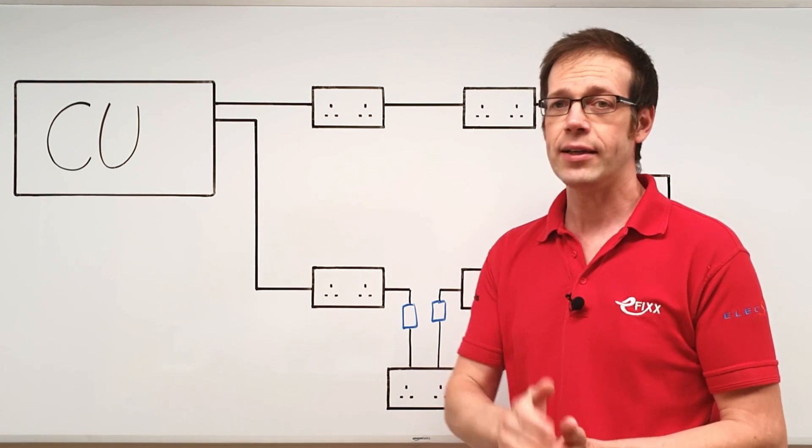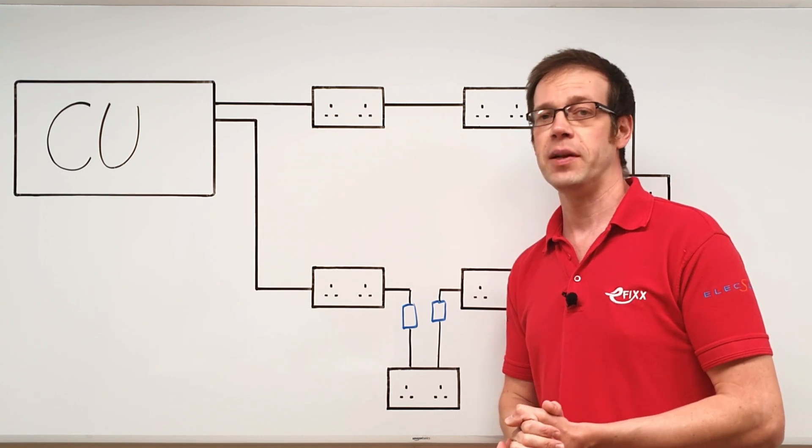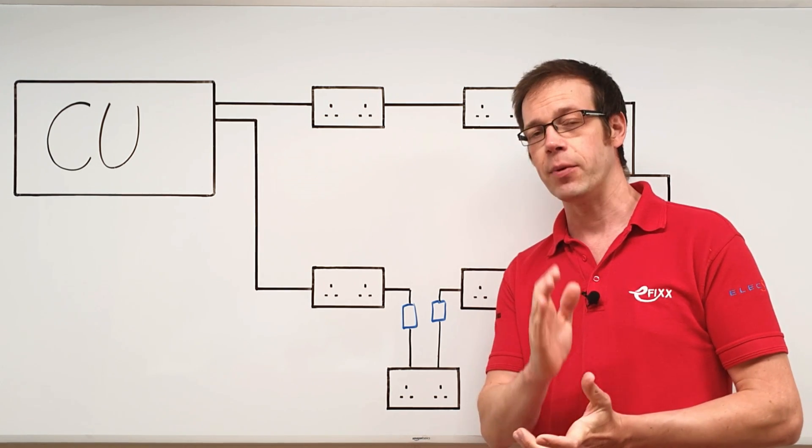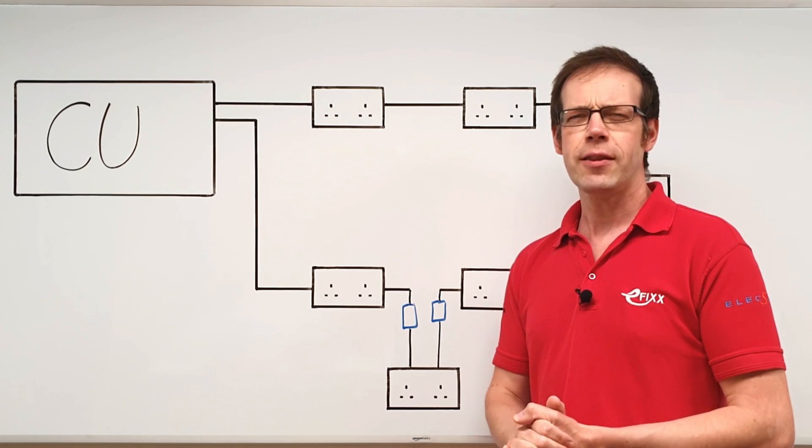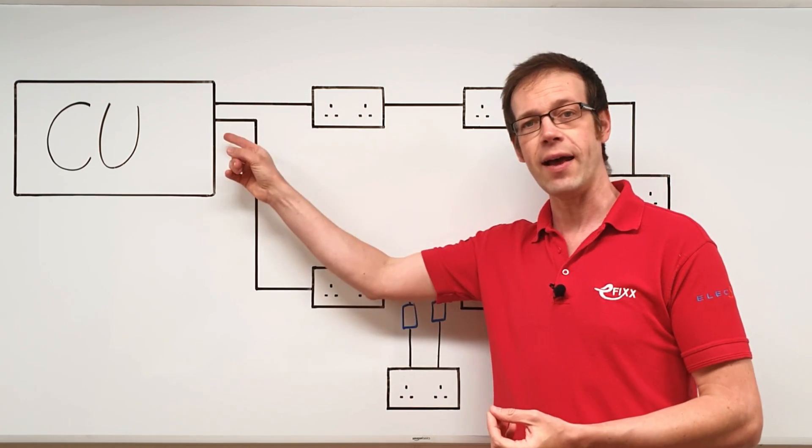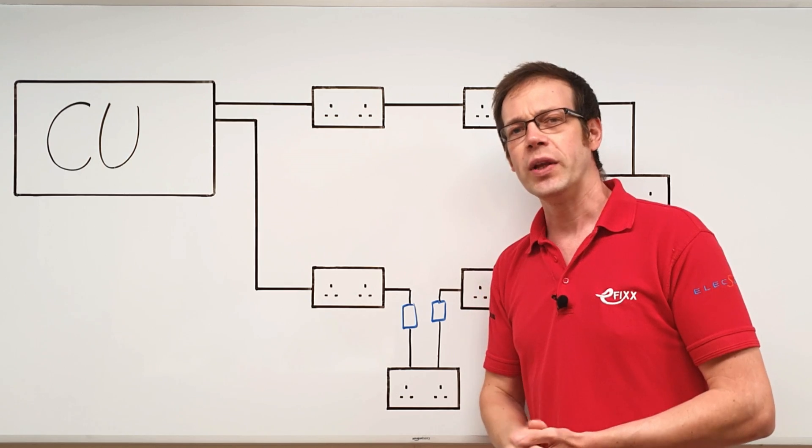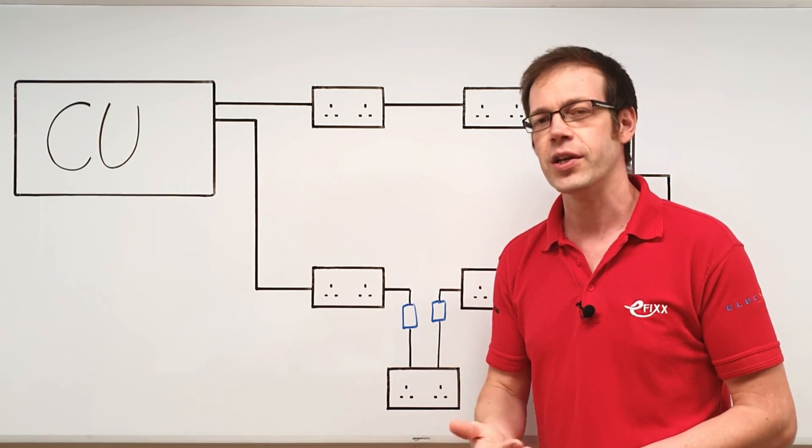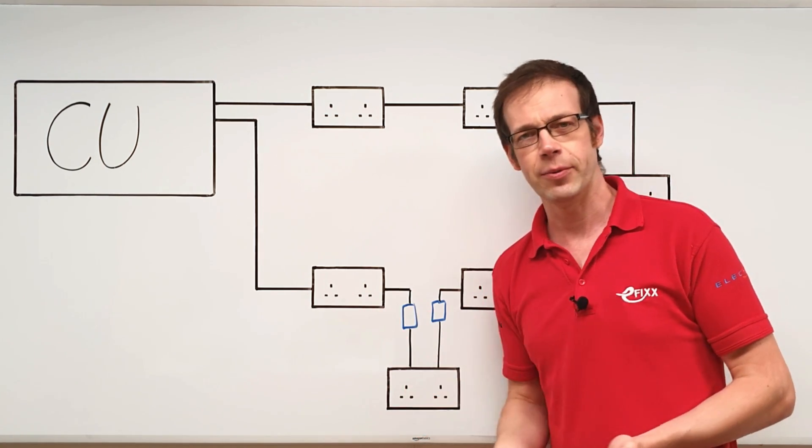Now, I'm sure you'll remember that a radial circuit wired in 2.5 millimeters squared can be protected by a 20 amp MCB. It's an interesting thought that when we convert to a ring, giving the electricity that additional path from the consumer unit, we don't double the amount of current the circuit can draw. You'll sometimes hear people say we've effectively doubled the cross-sectional area of the cable feeding this circuit by putting that extra leg in.